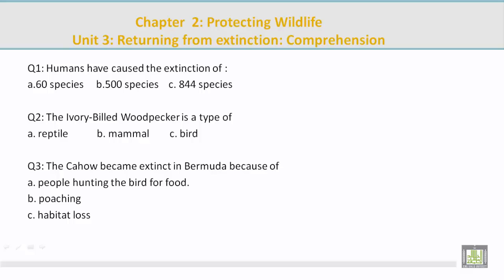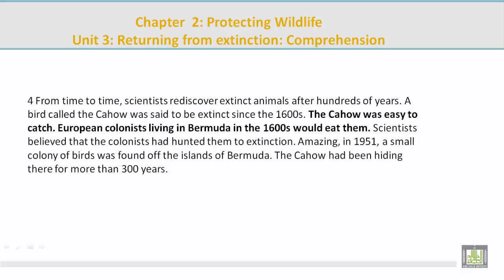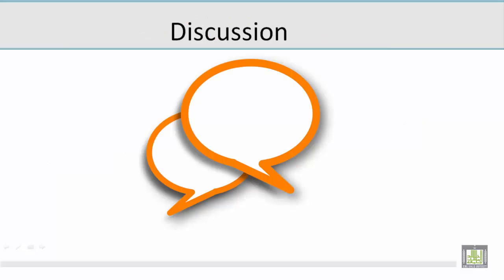Question 3: The Cahow became extinct in Bermuda because of what? Answer A: people hunting the bird for food. The highlighted sentences read: 'The Cahow was easy to catch. European colonists living in Bermuda in the 1600s would eat them.' Now for a discussion — Mohamed shares what he learned: man has over-consumed many things in this world, causing the extinction of 844 plant and animal species. The coelacanth is an ancient fish once thought to be extinct since the time of the dinosaurs. Lastly, the Cahow was a bird hunted to near-extinction by humans for food.